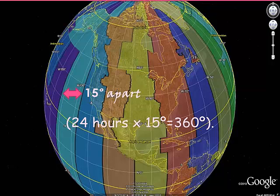Why 15 degrees, some may ask? 15 degrees because the Earth moves 15 degrees every hour. There are 24 time zones because there are 24 hours each day.